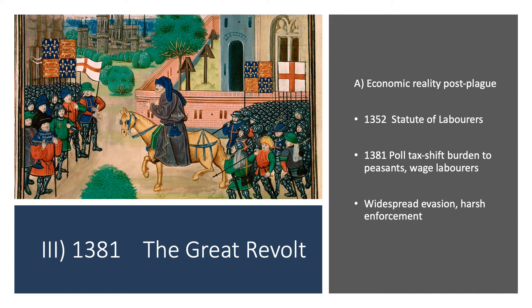Unfortunately, the nobility was not happy about these shifts. It's not that the nobility weren't still profiting — they were — but they wanted to profit more. In 1352, parliament passed a Statute of Laborers which attempted to unilaterally return wages to pre-plague levels, ignoring the natural operations of supply and demand. For the most part there was no enforcement, but it certainly reflected the lack of sympathy the upper classes felt for the peasants. Then in 1381 these series of taxes shifted the burden further onto peasants and wage laborers, creating widespread anger and evasion.